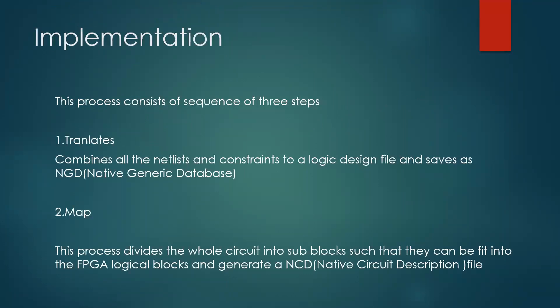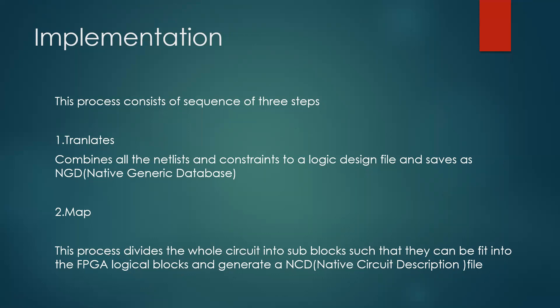Then comes implementation, which contains three stages: translation, mapping, and place and route. Translate combines all the netlists — the output of the synthesis — along with the user constraints, and saves them as an NGD (Native Generic Database) file. Mapping divides the whole circuit into sub-blocks such that they can fit into the FPGA logical blocks, and generates a NCD (Native Circuit Description) file.